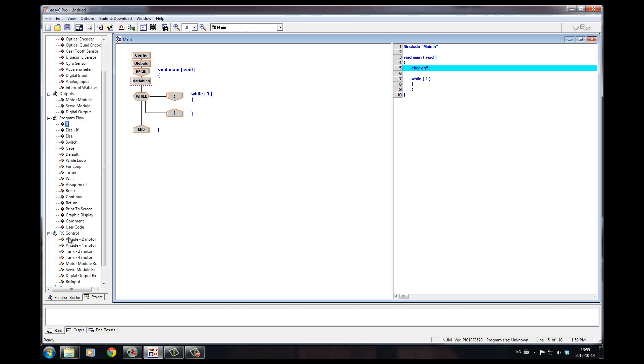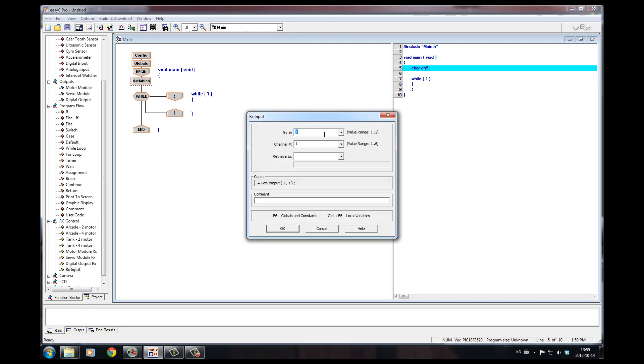So here, first thing I do is to go into RC control, remote controller control. I'm going to read RX input. What that means is it's going to go and check on port RX1 on the VEX interface. It's going to go into RX1 on channel 5 of the remote controller.